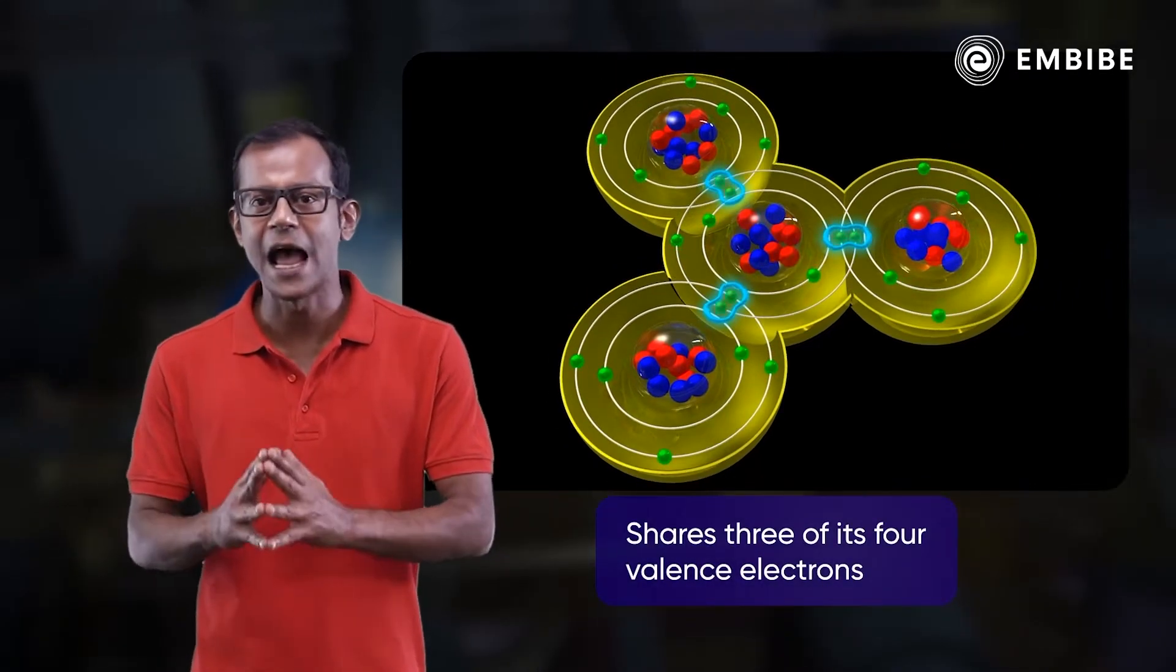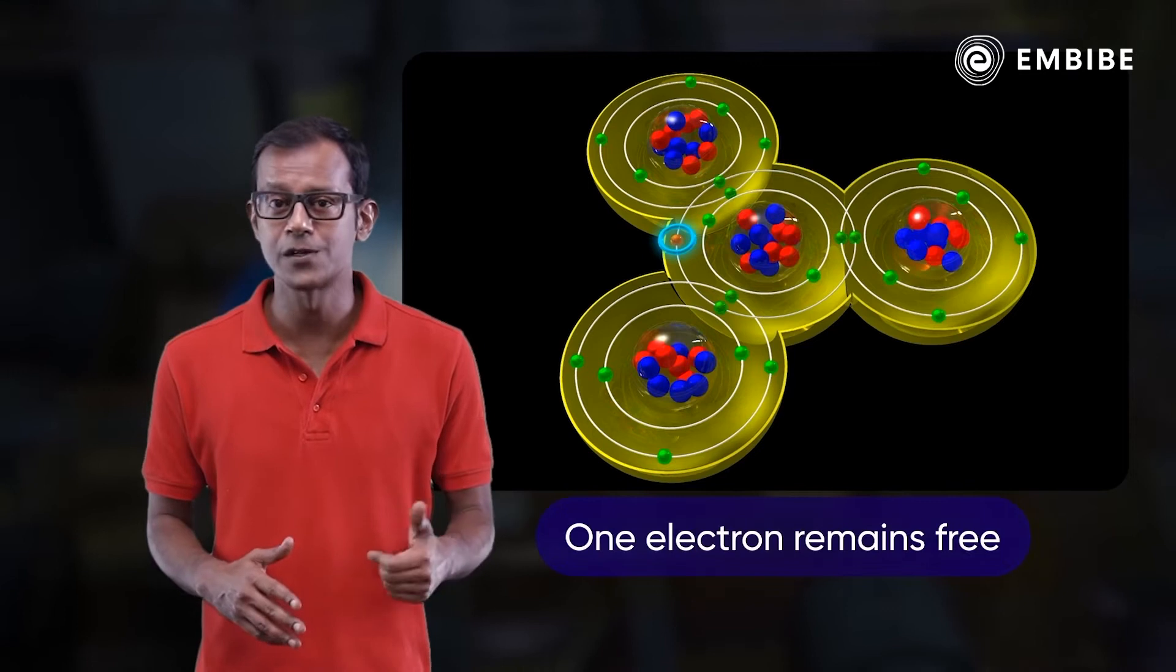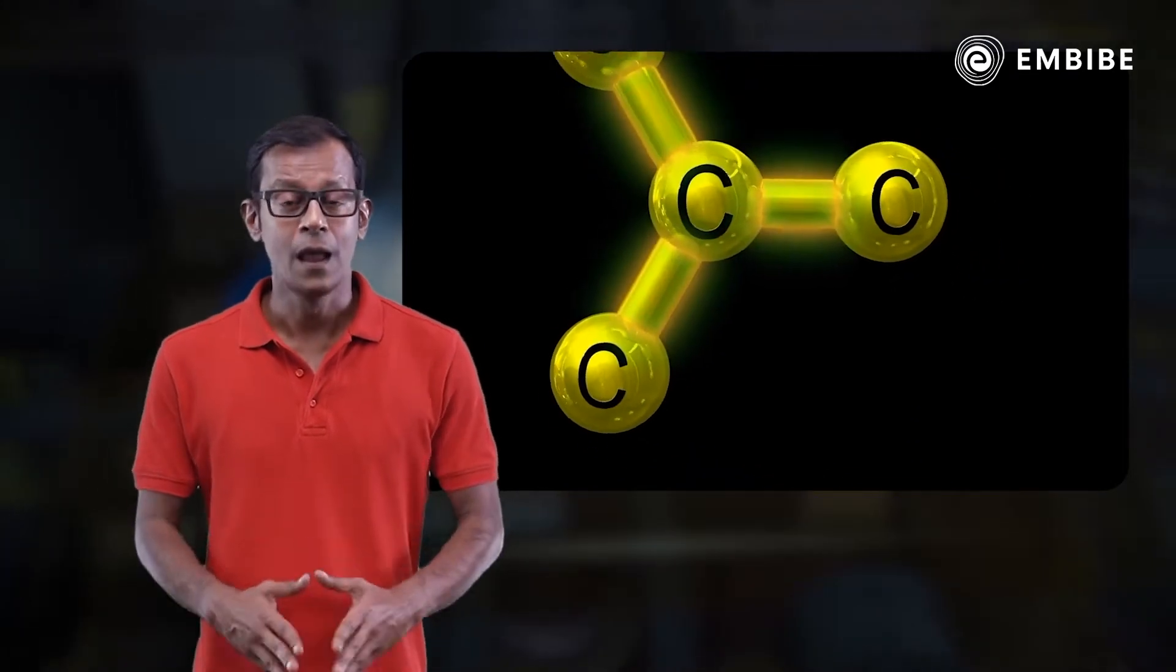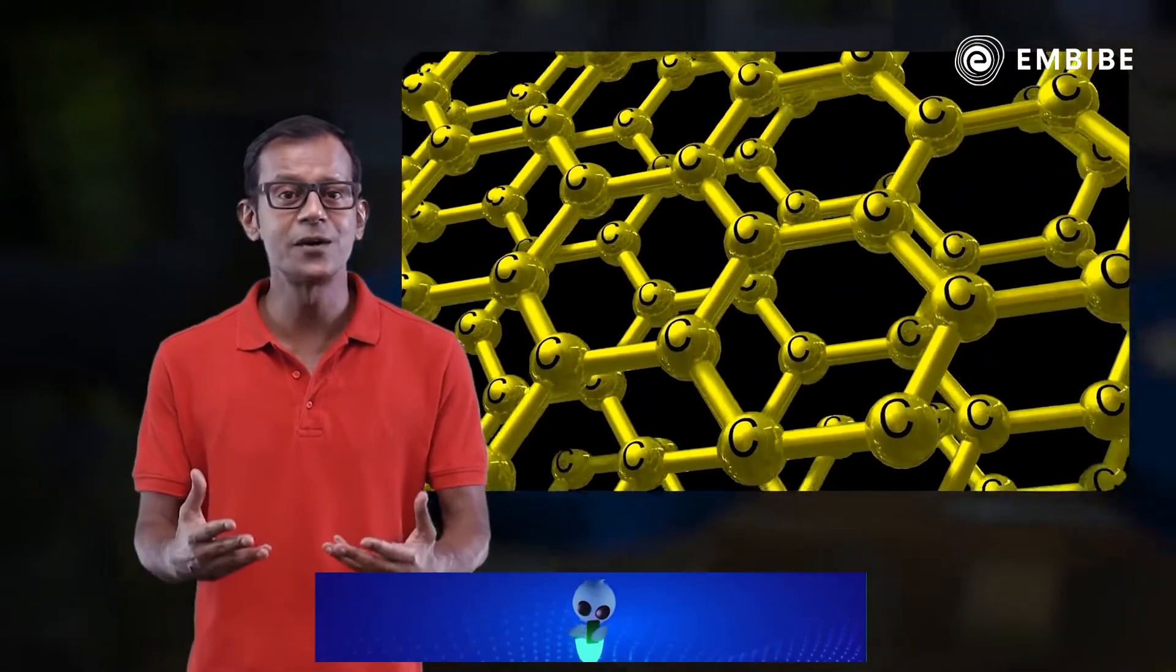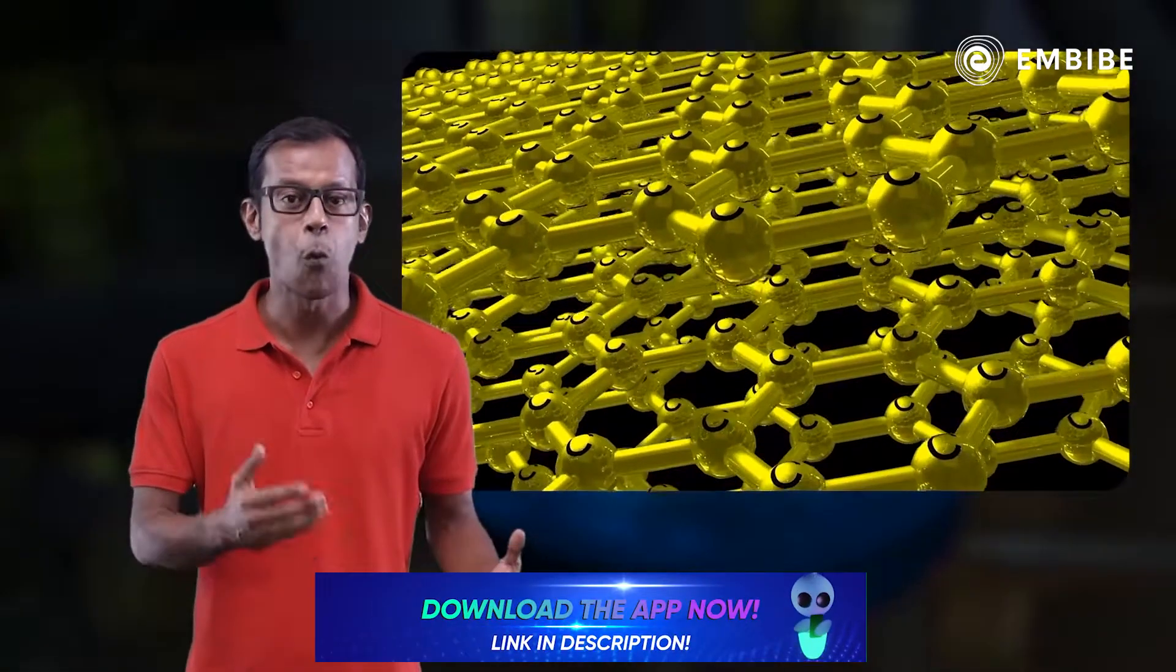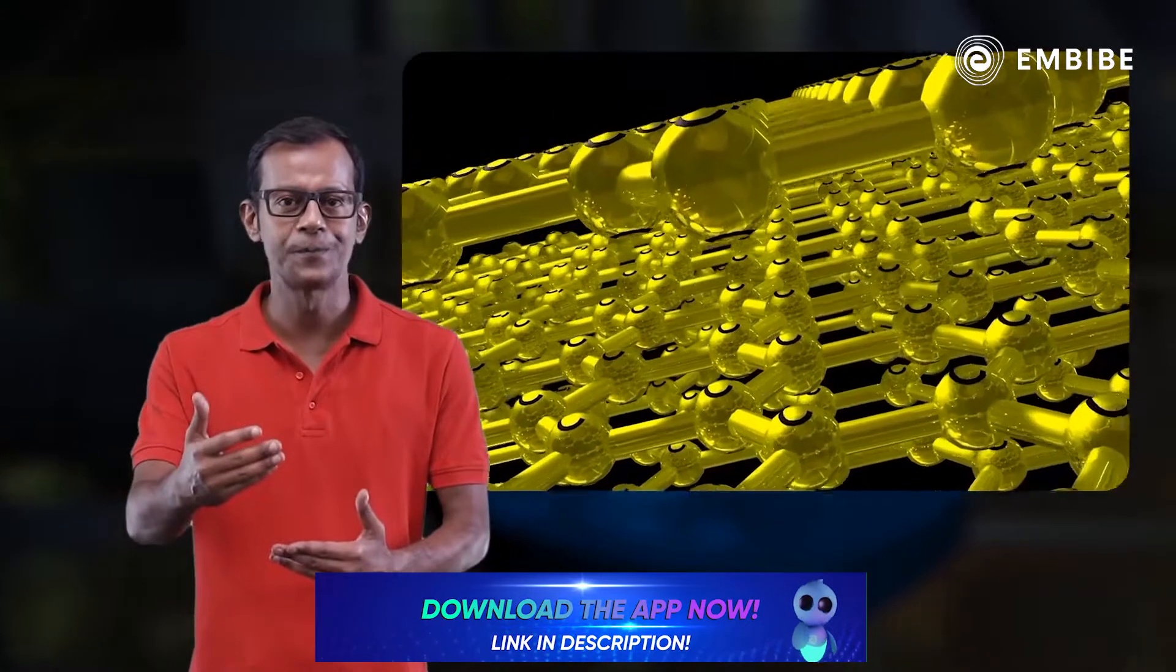This forms a hexagonal structure. Many such hexagonal structures are arranged one above the other in graphite. Each carbon atom gives one free electron which remains delocalized between the hexagonal structures.